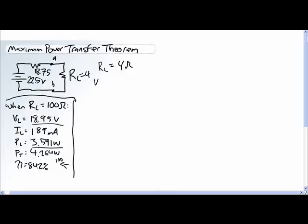So VL is equal to the voltage divided rule of 4 divided by 18.75 plus 4 times 22.5. So 4 divided by 4 plus 18.75 times 22.5 is equal to 3.956 volts, which is a lot lower than our earlier answer of 18.95.